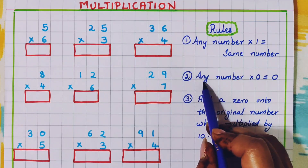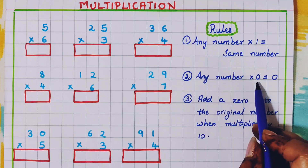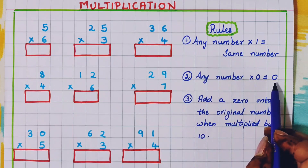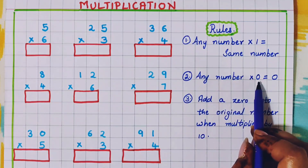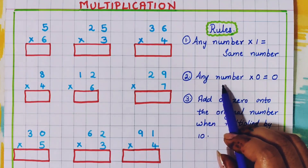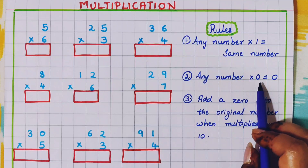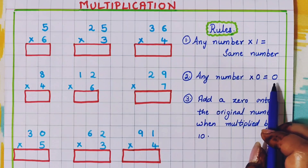Now the second rule. Any number, when multiplied by 0, the answer is going to be 0. If I multiply 8 into 0, the answer will be 0 itself. If I multiply 15 into 0, the answer will be 0. So any number multiplied by 0, the answer will be 0.